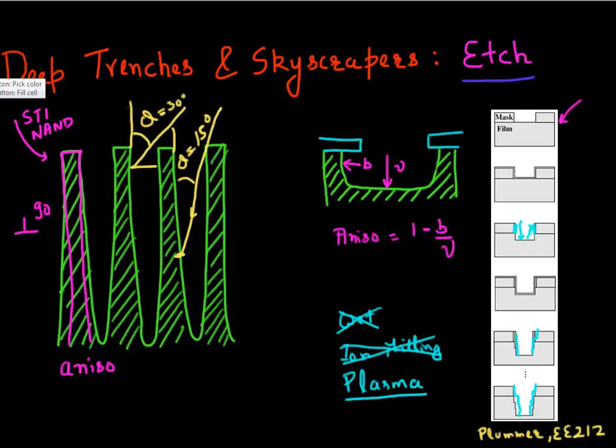Another phenomenon that you get is charging. If you are etching a structure this steep, especially if you're etching a dielectric, there are charges which build up over here. They essentially deflect the incoming ions or the incoming species, they deflect them back. That also contributes to this narrowing of this profile as you go further.